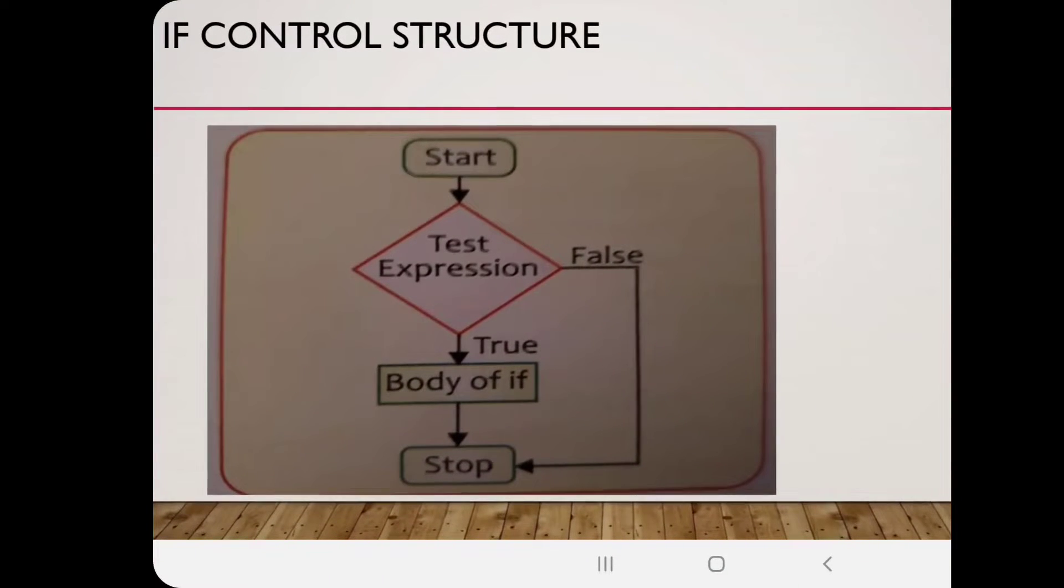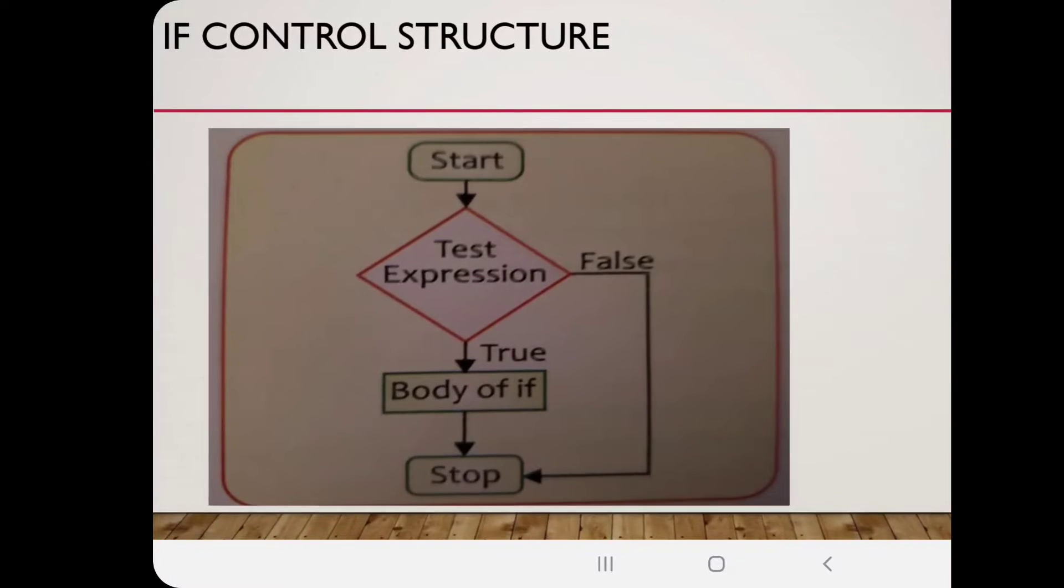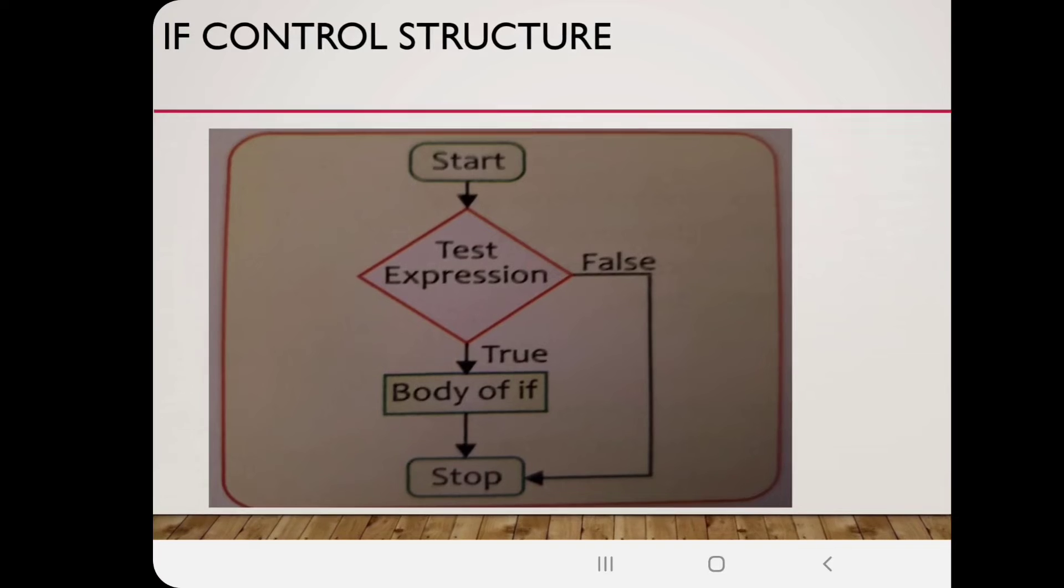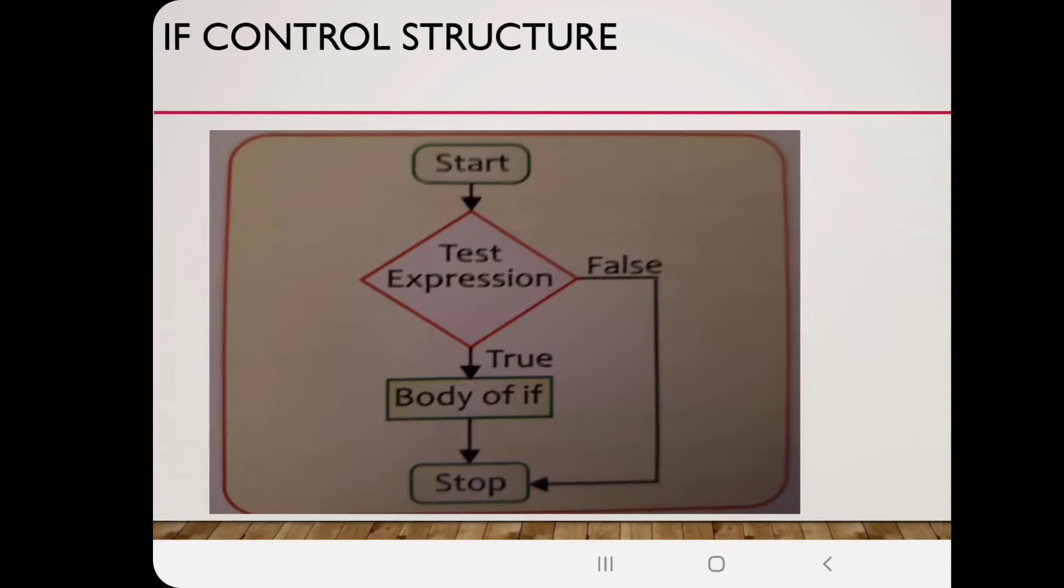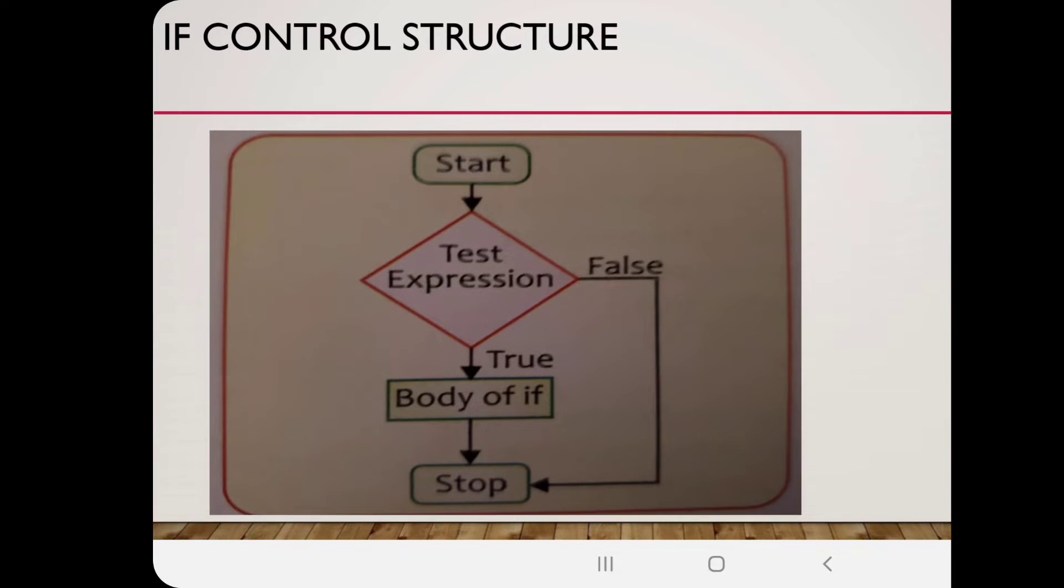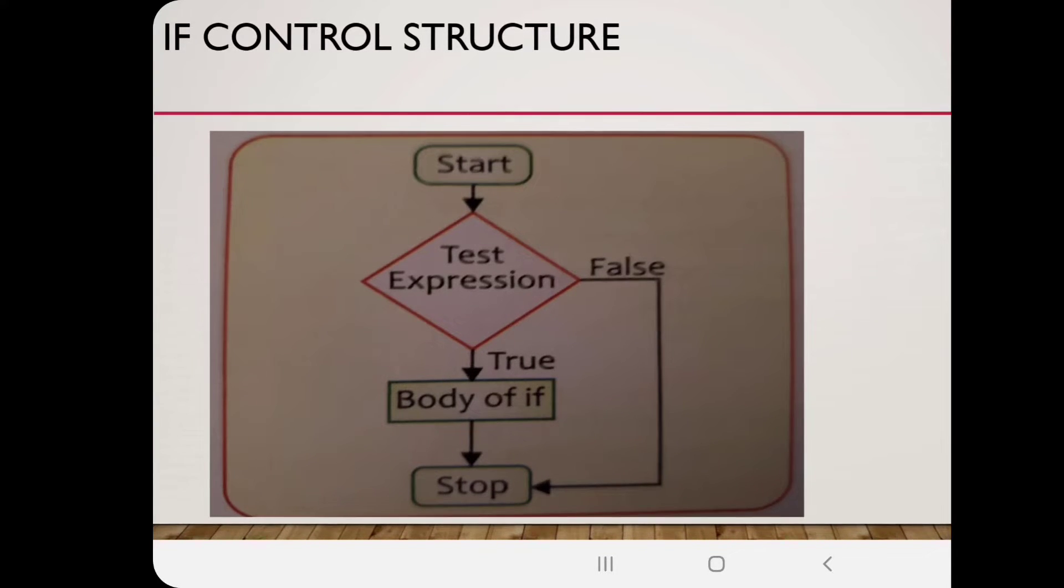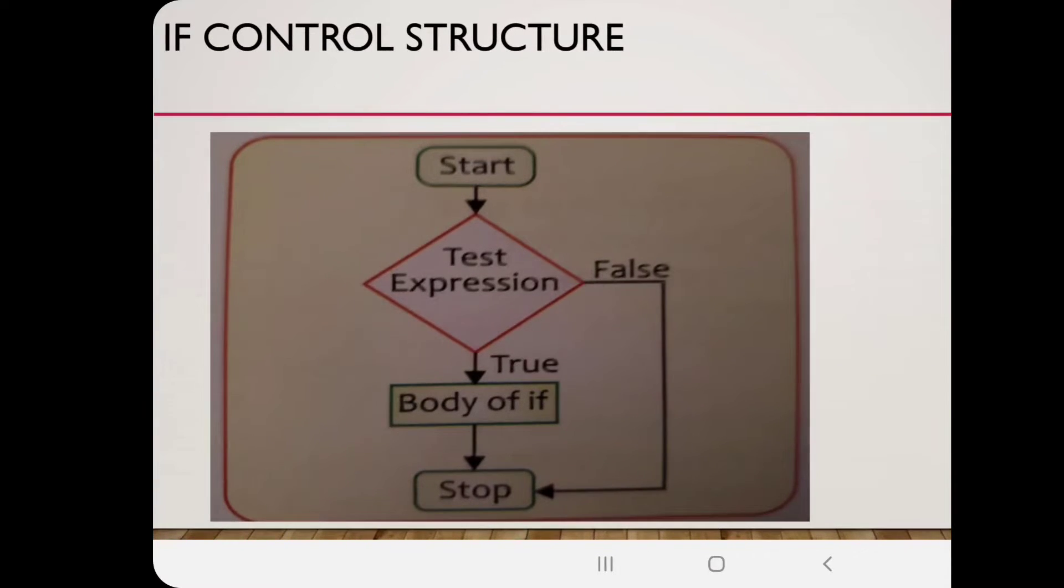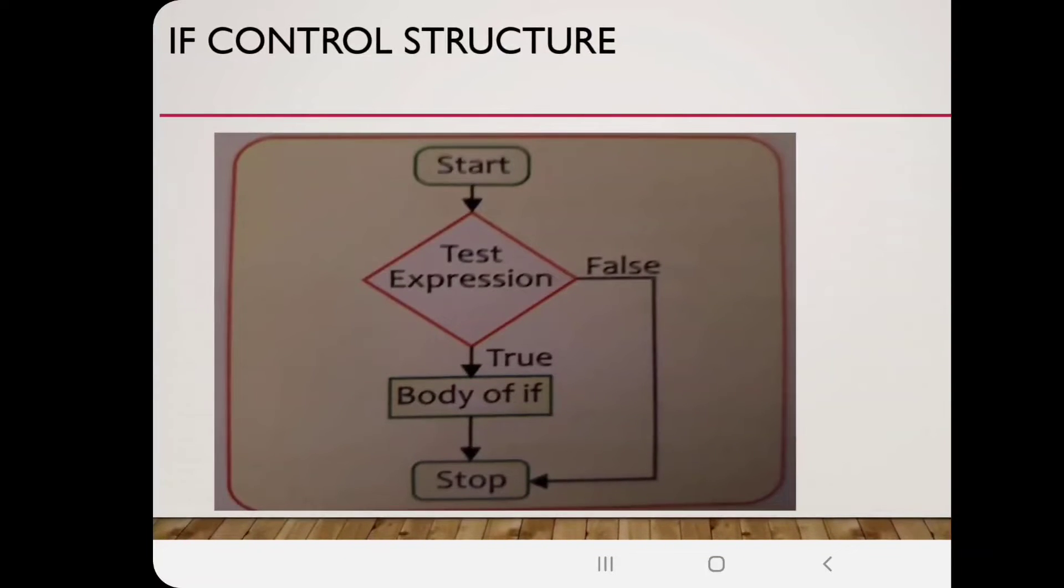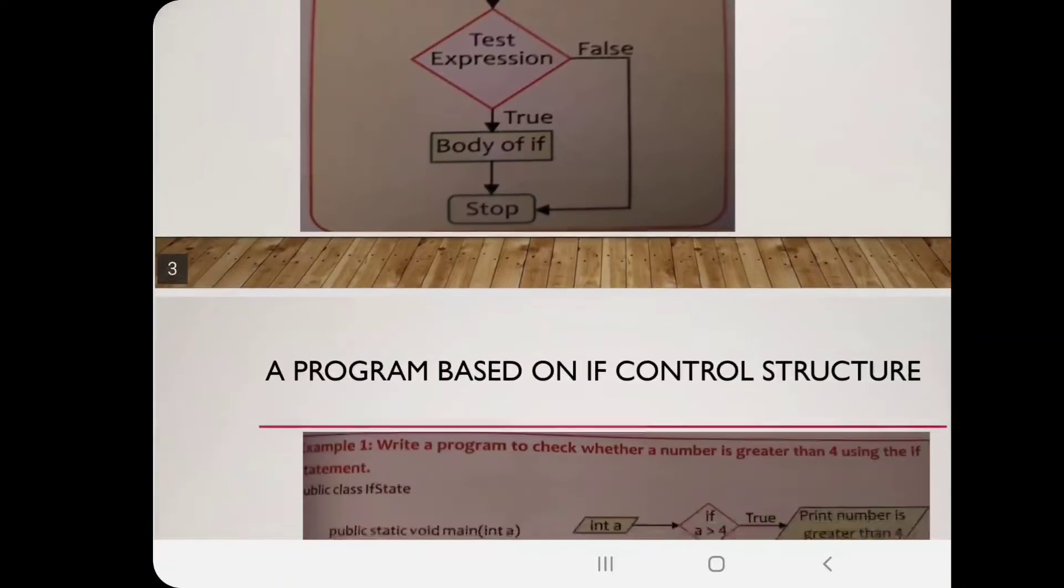This is the general structure of an if statement. You can see we have started the program, then there is an expression, a condition which is in a decision box, a diamond symbol. This is our decision box where you put a condition. If the condition goes through, the program will execute; otherwise, it will stop. The test expression has two arrows: one is true and one is false. The false one directly goes to the stop button, meaning if that condition is not true, this program is not going to execute.